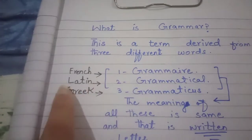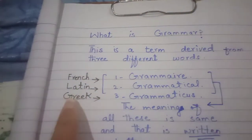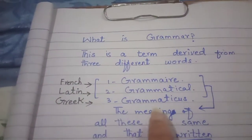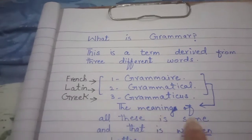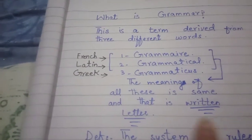In French we say 'Grammaire,' in Latin language we say 'Grammatical,' and in Greek 'Grammaticus.' The meaning of all these is the same: written letters.